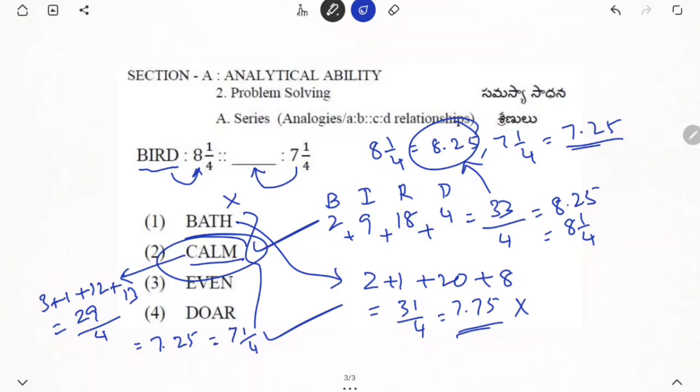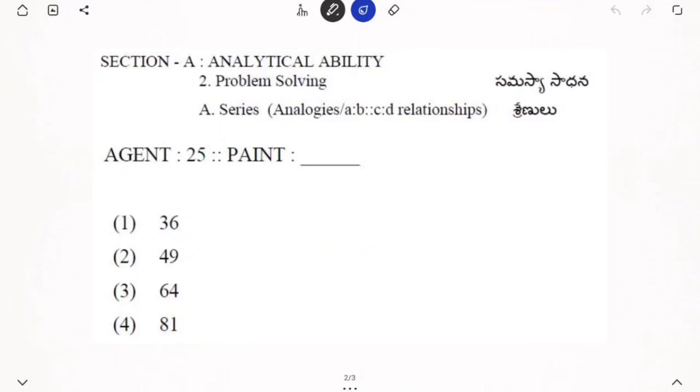Some of the questions are given based on the logic that for alphabets you write the serial numbers. A is 1, B is 2 like this. Then you try, then hopefully we will get that one. Then we will see the next question. This question also came in the exam before in 2024.